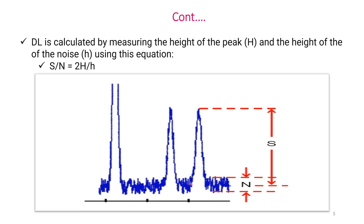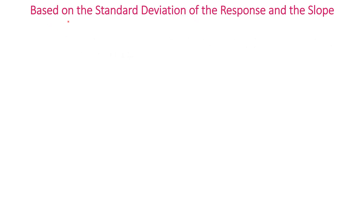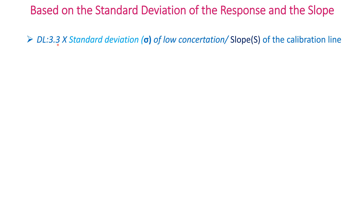In this chromatogram, capital H is the height of the peak and small h is the height of the noise. S/N is calculated as 2 × H ÷ h. DL can also be calculated based on standard deviation of the response and the slope: DL = 3.3 × σ ÷ S, where σ is the standard deviation of low concentration responses and S is the slope of the calibration line.